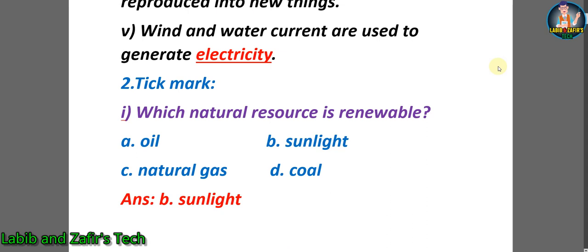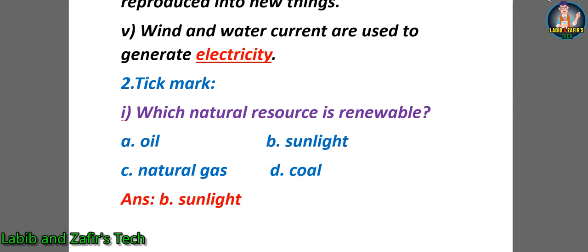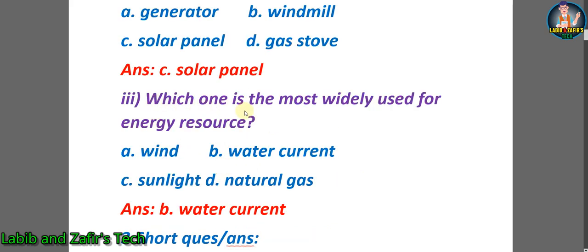Now let's go through some tick mark questions. Number 1: Which natural resource is renewable? Options: a) oil, b) sunlight, c) natural gas, d) coal. Sunlight is the only renewable resource among these, so the answer is b) sunlight. Number 2: Which device can change sunlight into electricity? Options: a) generator, b) windmill, c) solar panel, d) gas stove. The answer is c) solar panel. Number 3: Which one is the most widely used energy resource? Options: a) wind, b) water current, c) sunlight, d) natural gas. The correct answer is b) water current.